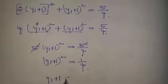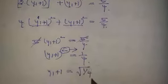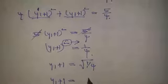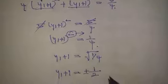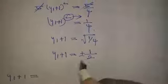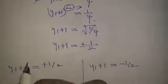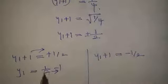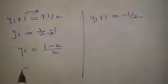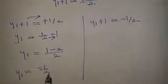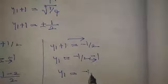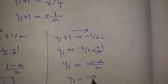Taking square root: y1 plus 1 equals plus or minus 1 by 2. Case 1: y1 plus 1 equals 1 by 2, so y1 equals 1 by 2 minus 1 equals minus 1 by 2. Case 2: y1 plus 1 equals minus 1 by 2, so y1 equals minus 1 by 2 minus 1 equals minus 3 by 2.